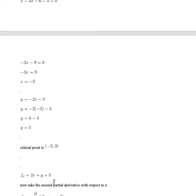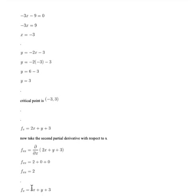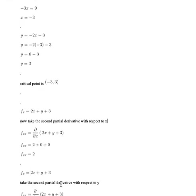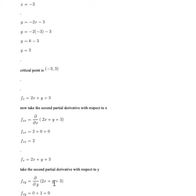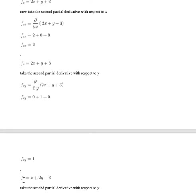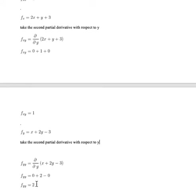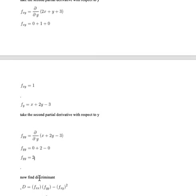Now we take the second partial derivatives. The second partial derivative with respect to x, fxx, equals 2. The second partial derivative with respect to y, fyy, equals 2. We also need fxy to find the discriminant.